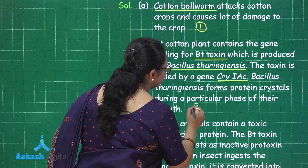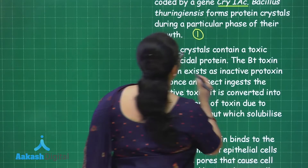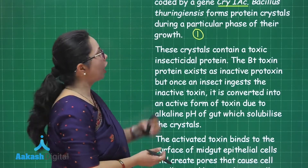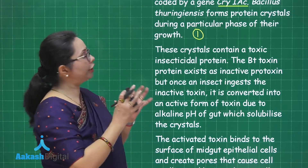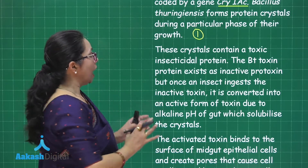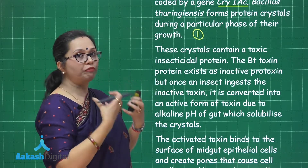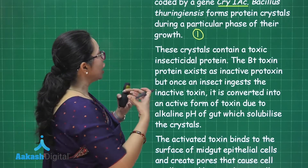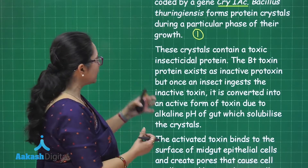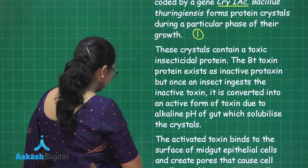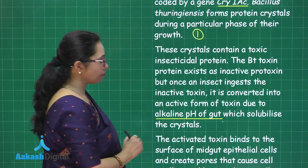These crystals contain a toxic insecticidal protein — the BT toxin protein. It exists in the form of an inactive prototoxin. But once an insect ingests the spores produced by the bacteria, this prototoxin is converted into the active form of the toxin due to the alkaline pH of the insect's gut. This part is also worth one mark.